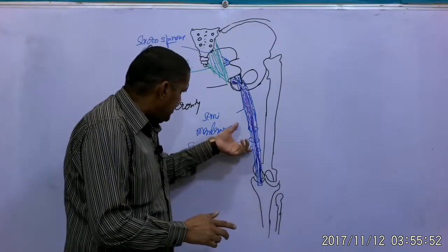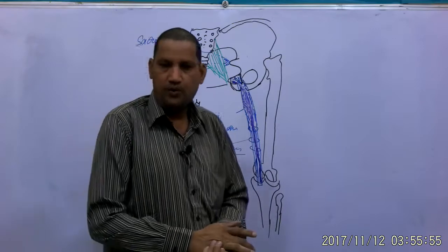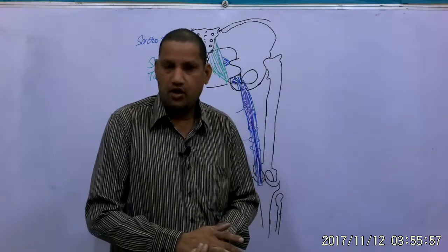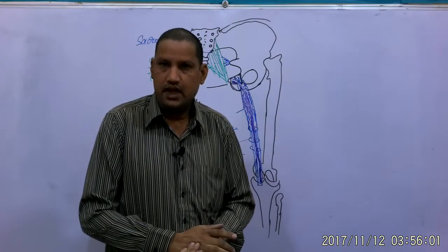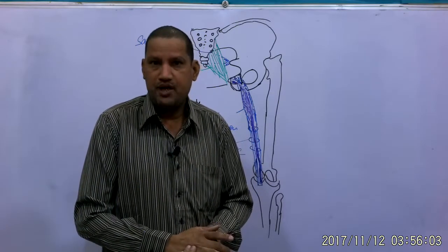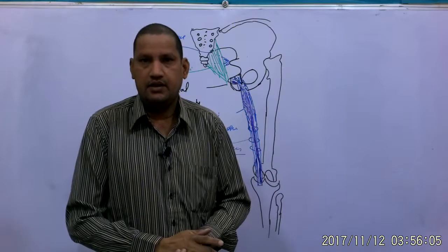The other muscle is having upper part fleshy but lower half is tendon like so known as semi tendinosis.